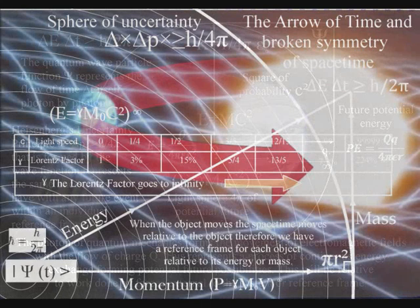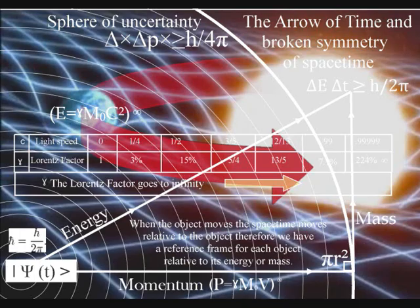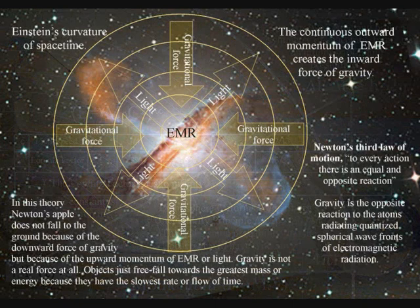In this theory, objects form their own time by slowing up the rate that time flows relative to their own energy or momentum. Gravity is not a real force. Objects just freefall towards the greatest energy because it has the slowest rate of time, or the greatest time dilation.